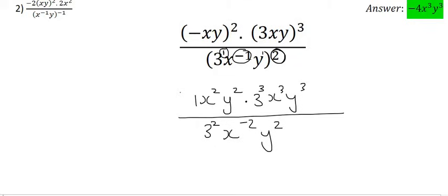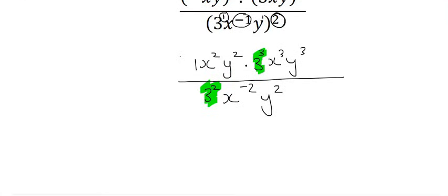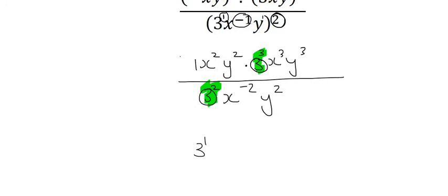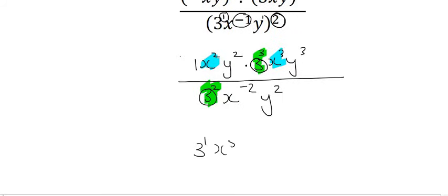Now we can combine vertically. I'll do the 3s first: the exponent rule says that when the bases are the same — and they both have a 3 — we minus the exponents. So it's going to be 3 to the power of 1 at the top, because it's 3 minus 2. Then for the x's — and maybe some of you spotted this — we can put the x's at the top together, giving x to the power of 5. We can also put the y's together, giving y to the power of 5.